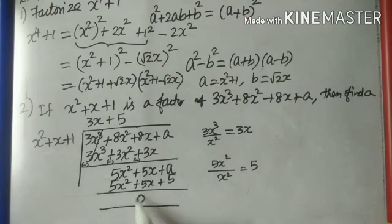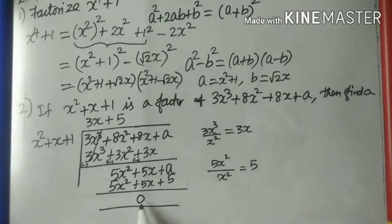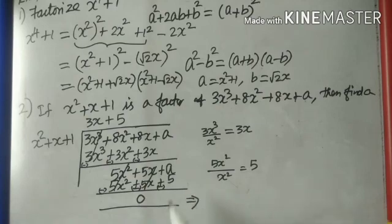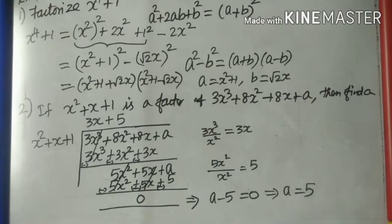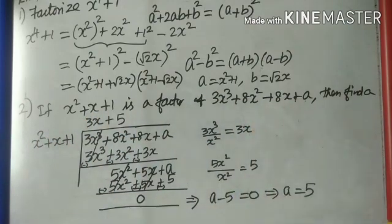The remainder must be 0 because x²+x+1 is a factor — a factor must exactly divide the polynomial. After subtraction, we get a - 5 = 0, which implies a = 5. So the value of a is 5. Exercise 2.7 has only 2 problems, and we use the identity for completing the square and the factor division method.